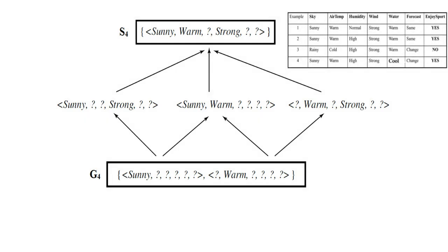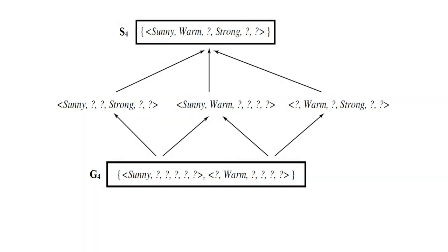The final hypothesis set consists of S4 and G4. Between them, there are 2^6 possible combinations that can be derived. There is a set of hypotheses between S4 and G4 that correctly classify the training data. Three examples are shown: (sunny, ?, ?, strong, ?, ?), (sunny, warm, ?, ?, ?, ?), and (?, warm, ?, strong, ?, ?). This set of hypotheses correctly classifies the given training samples.